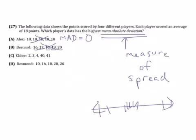So look at C and D. Which one is the most spread out? Whichever one is the most spread out will have the highest mean absolute deviation.